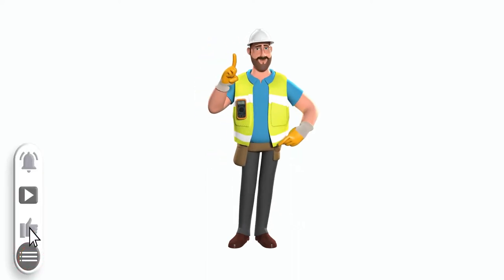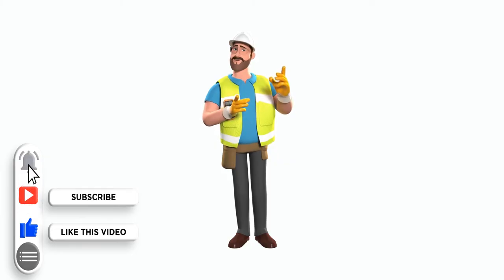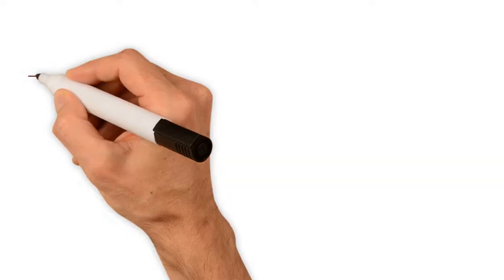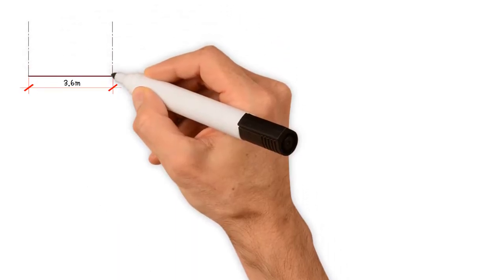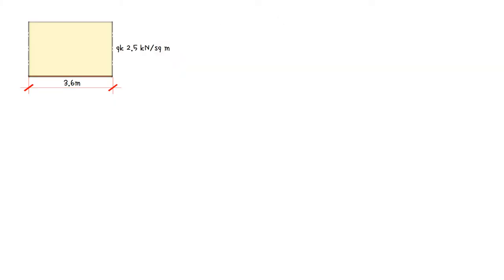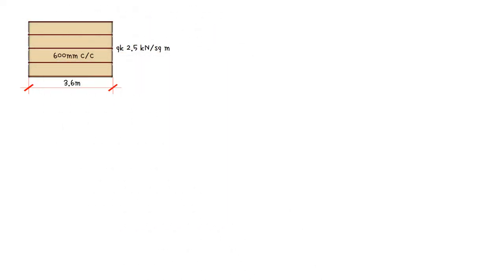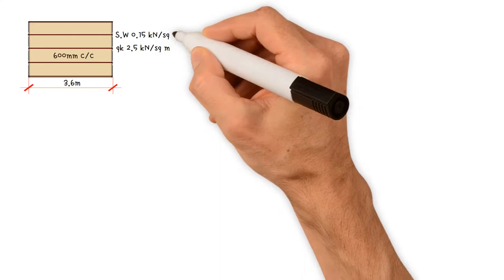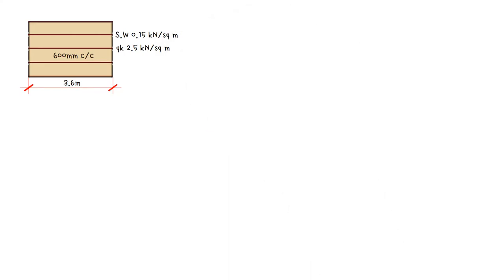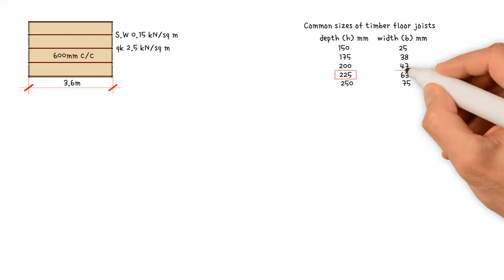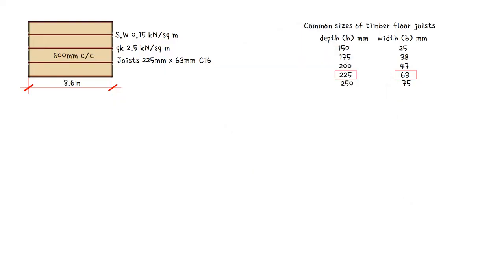Welcome back to the channel. In today's video, we will be discussing how to check the resistance of timber joist to bending and shear stresses and undertake a deflection check. A timber floor is to span 3.6 meters and is supporting a characteristic imposed floor load of 2.5 kilonewtons per square meter. The joists are placed at 600 millimeters spacing and have timber boards fixed on top that have a self-weight of 0.15 kilonewtons per square meter. We need to find a suitable timber joist to support this load. These are common sizes of timber floor joists. We will check if a 225mm by 63mm C-16 is ideal to carry the load.